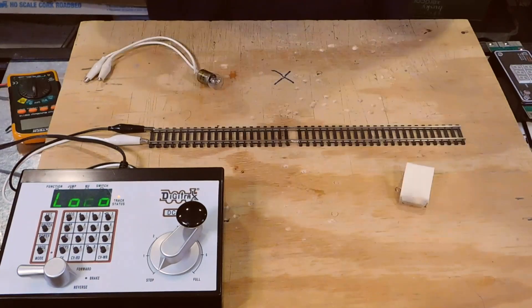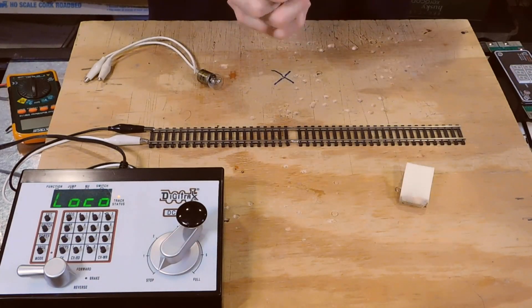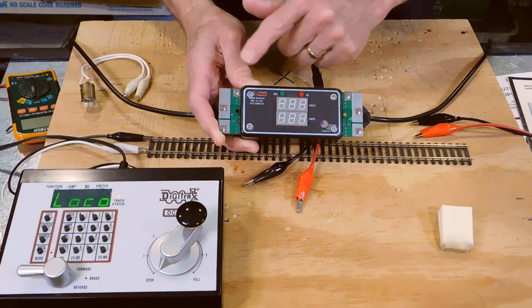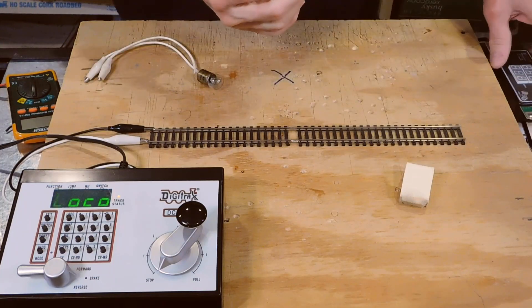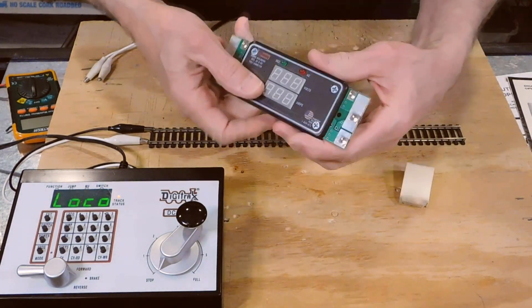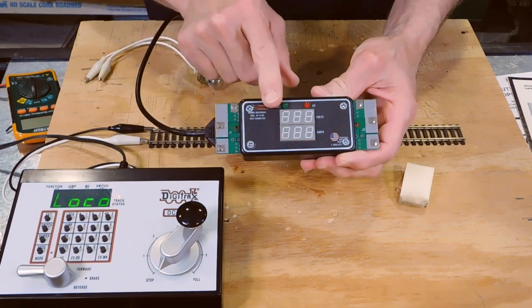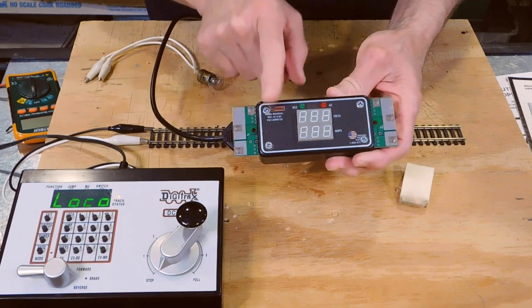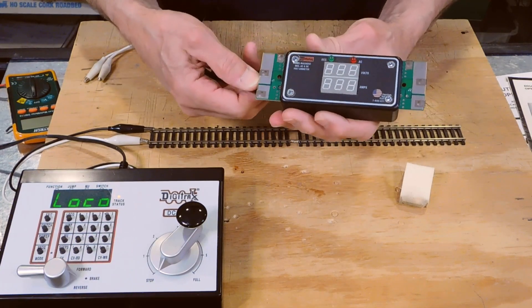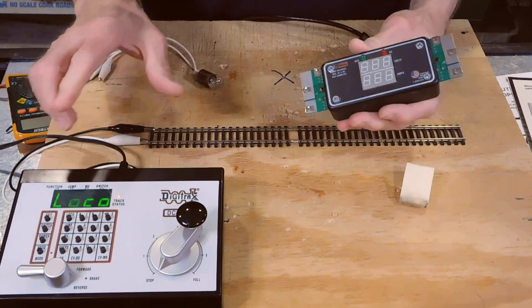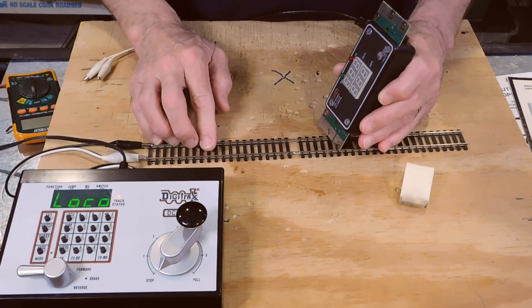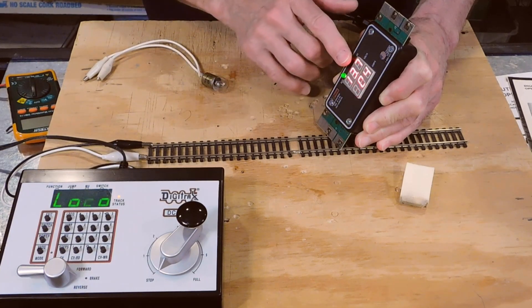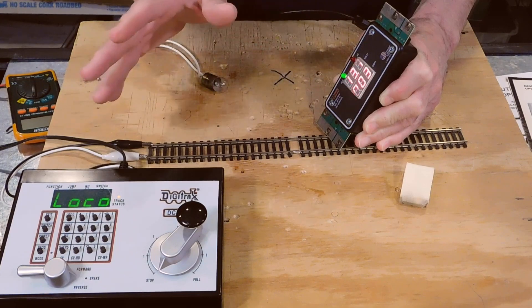Let's take a look at another method. The company that makes the PSX series of circuit breakers and a lot of other products, DCC Specialties, also makes a device called the RR Amp Meter. This is specifically designed with special electronics internally to allow you to directly measure track voltage and track amperage. I've got the command station on still, so I'm going to put this right on the track. You can see it's reading 13.7 volts. That's a no load output.